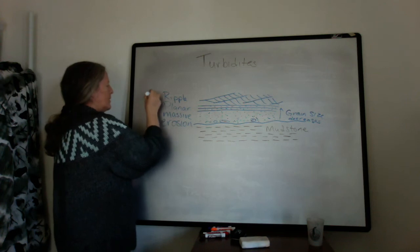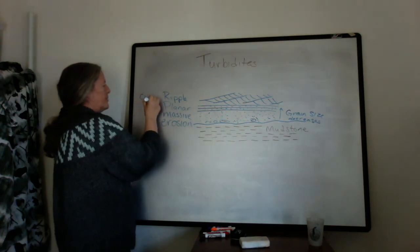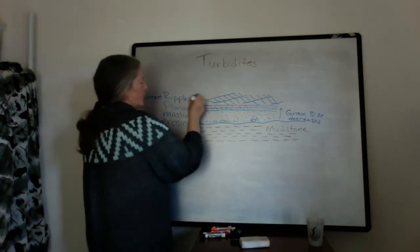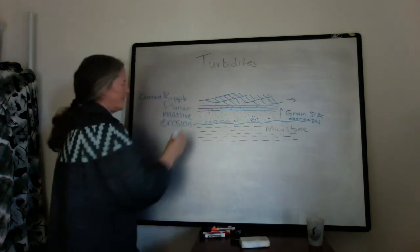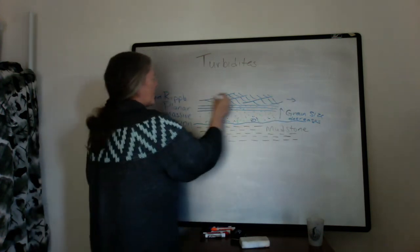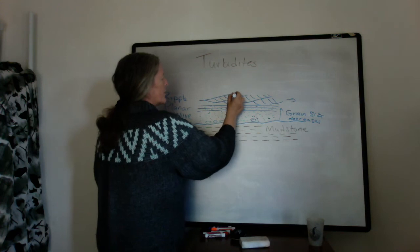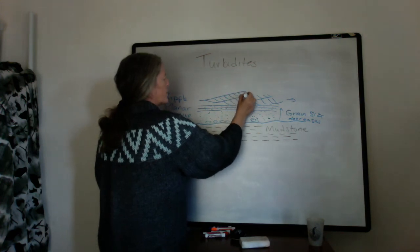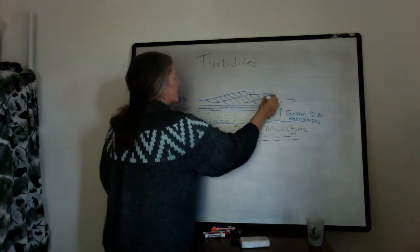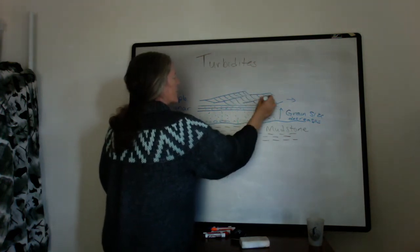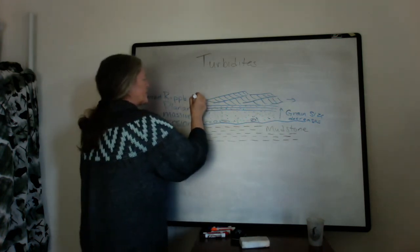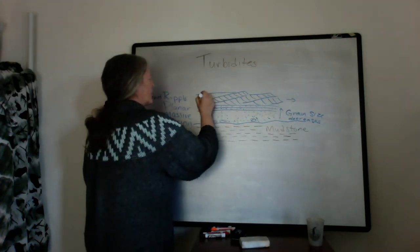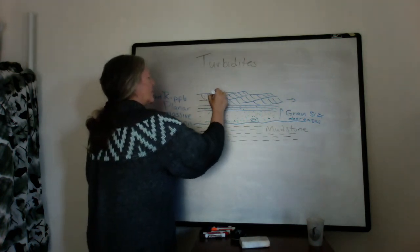I should specify that these are current ripples. They're showing flow in this direction, the way I drew them here. Sometimes you can even get the crest of the ripple preserved, and sometimes you don't — we'll say that one gets eroded off.